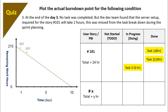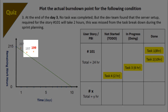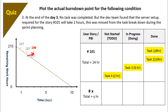Next, at the end of day three, no task was completed but the development team found that the server setup required for story number 101 will take two extra hours. This was missed from the task breakdown during the sprint planning meeting. So you need to plot the actual burndown point. Many times it happens that the development team is not able to foresee each and every task of the story. However, the day it is identified, it should be added to the task board. This task will add to the remaining work, hence instead of going down, the actual burndown chart will go up this time.